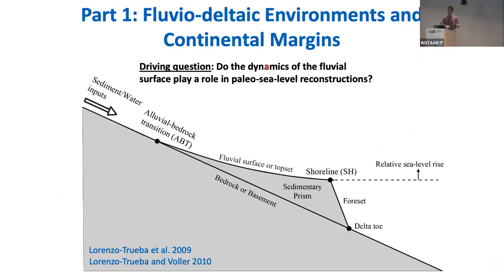I'm going to frame this moving boundary framework around the question: do the dynamics of the fluvial surface play a role in paleo sea level reconstructions? The first step is to idealize the geometry. We have a linear basement on top of which sediment and water come down and deposit, forming the sedimentary prism, delimited by the alluvial-bedrock transition upstream and the shoreline downstream. The trajectories of these key geomorphic boundaries determine the evolution of the sedimentary prism over time. The most common approach to reconstruct sea level is sequence stratigraphy, which assumes that the fluvial surface or topset responds instantaneously to sea level changes.